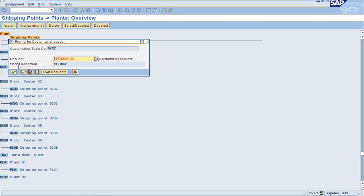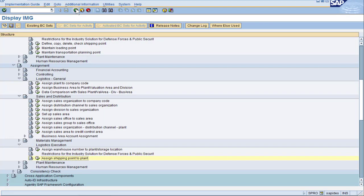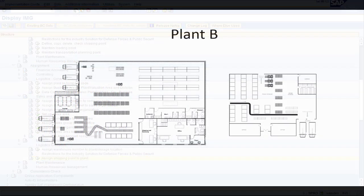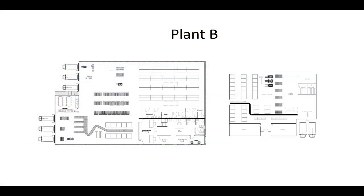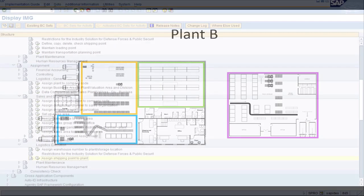Save it and we have now completed our very first plant configuration. The next example is to highlight that a plant doesn't necessarily have to represent one building. Just like plant A, we're going to have three storage locations in the main building and perhaps another building for a freezer. We will assume one shipping point for this entire plant.